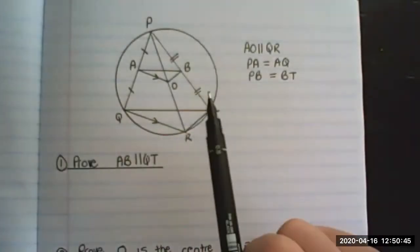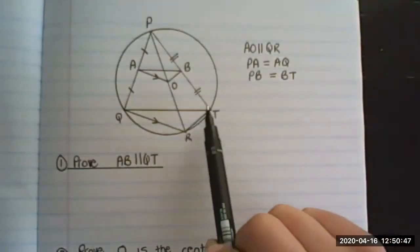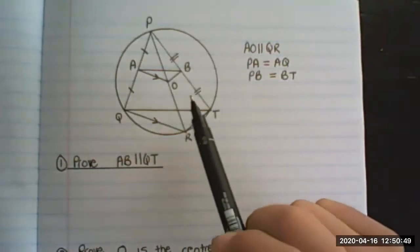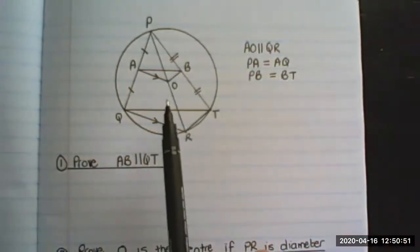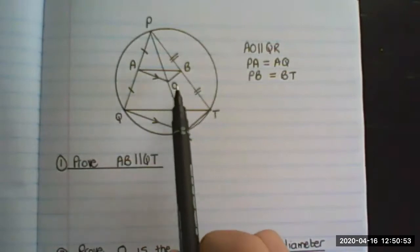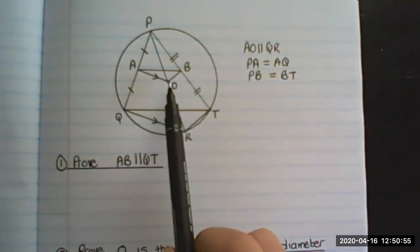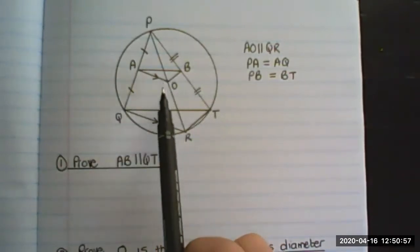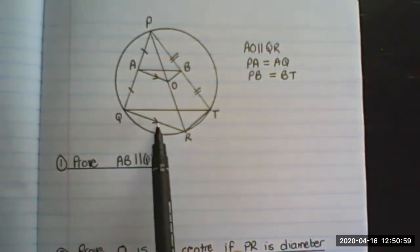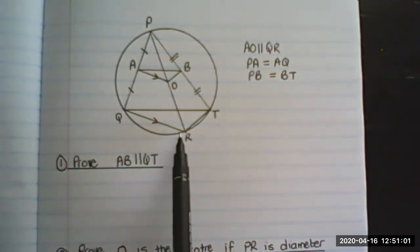Circle geometry you learn in grade 11, but the parts of the circle we can already use now. You can see that the information that is given is O is the center of the circle, AO is given as parallel to QR.